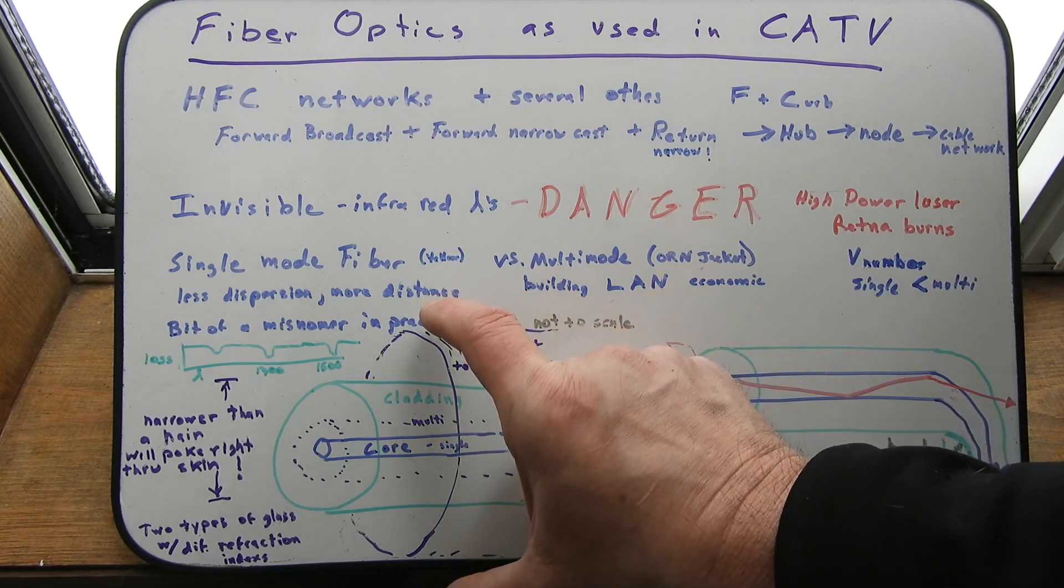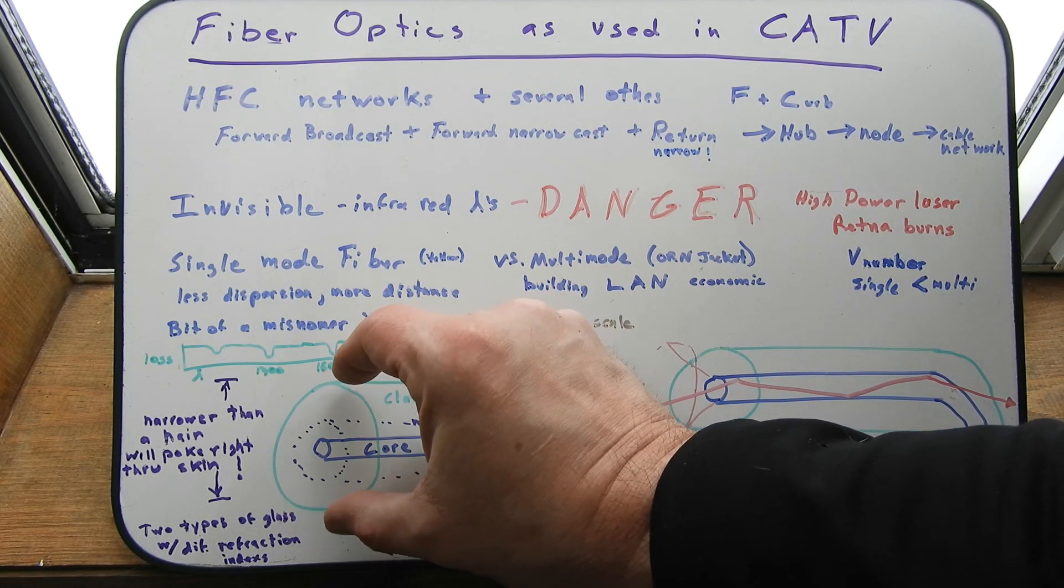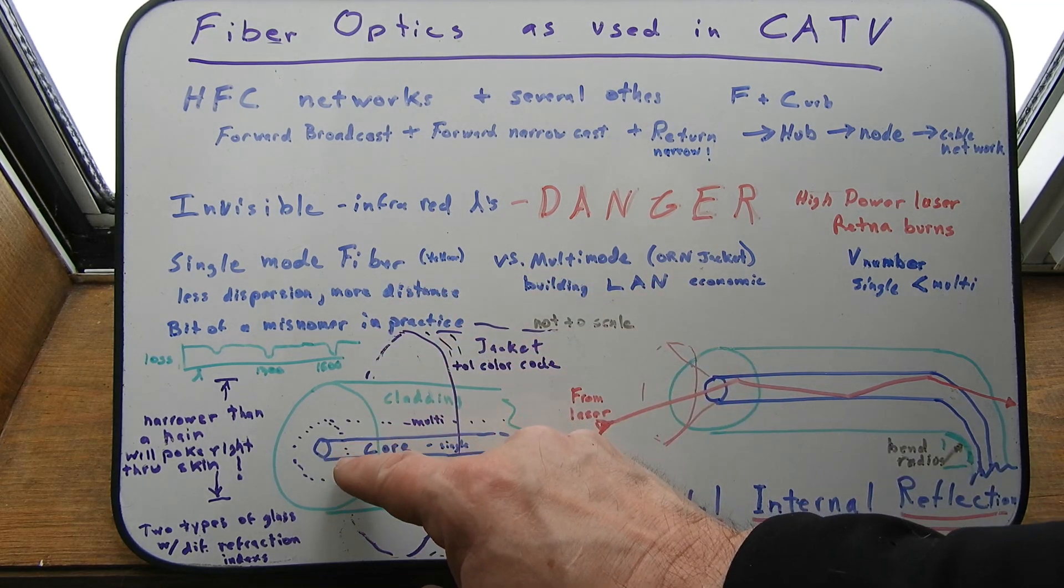So this outer jacket, like I said, is bigger. And it carries a color code. Inside of that is this fiber. And this part of the fiber is smaller than your hair. Like half maybe. Less. And then there's a core. It's even tinier.